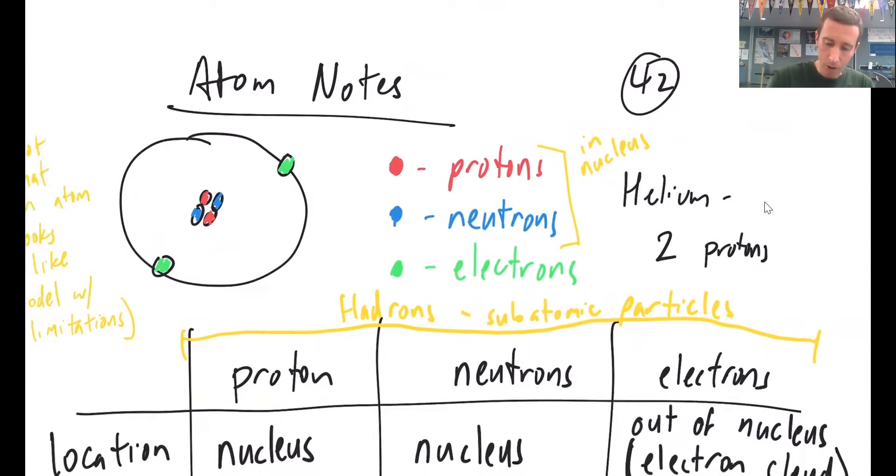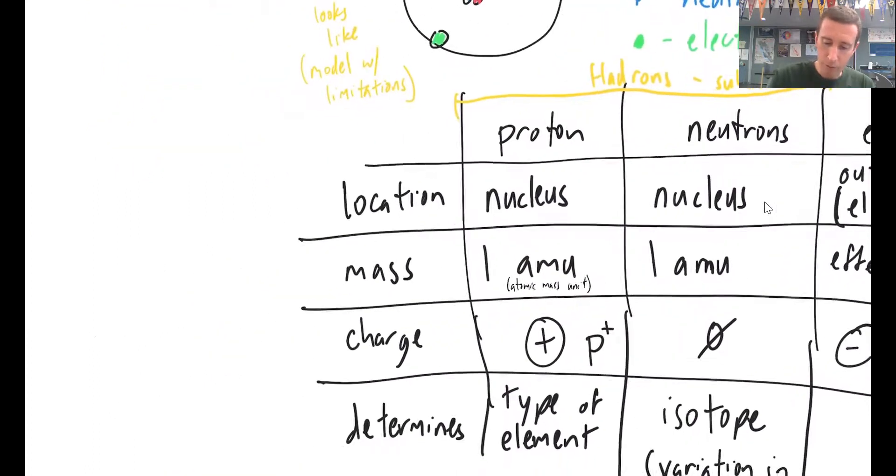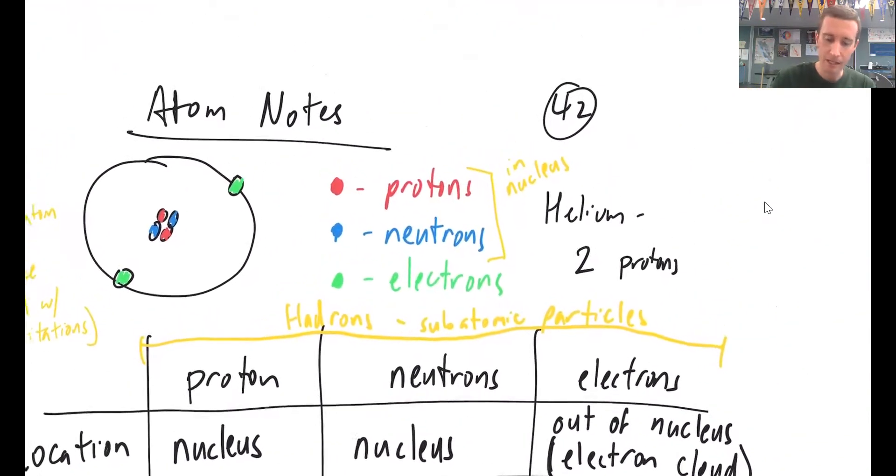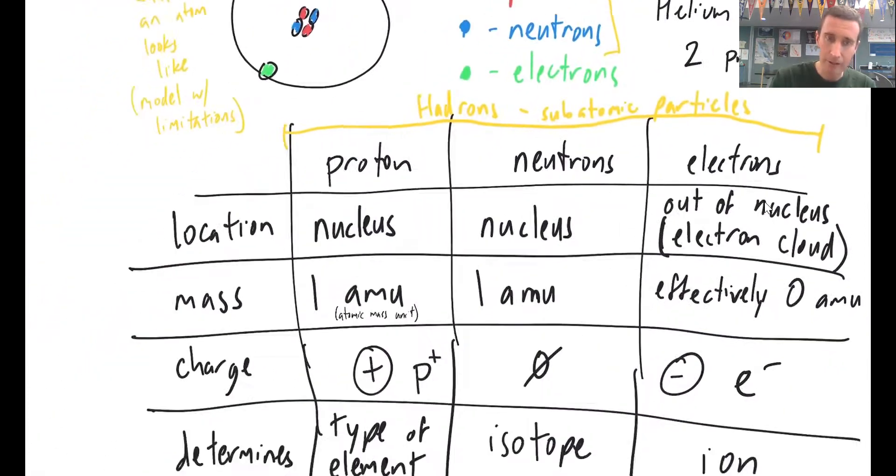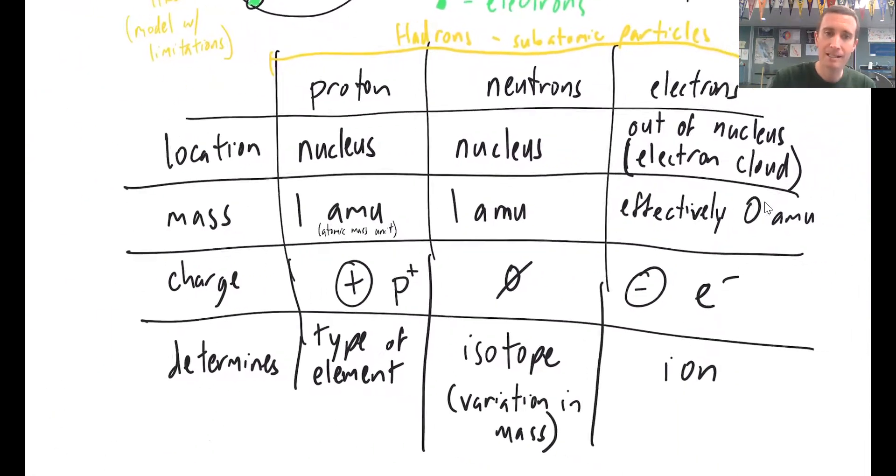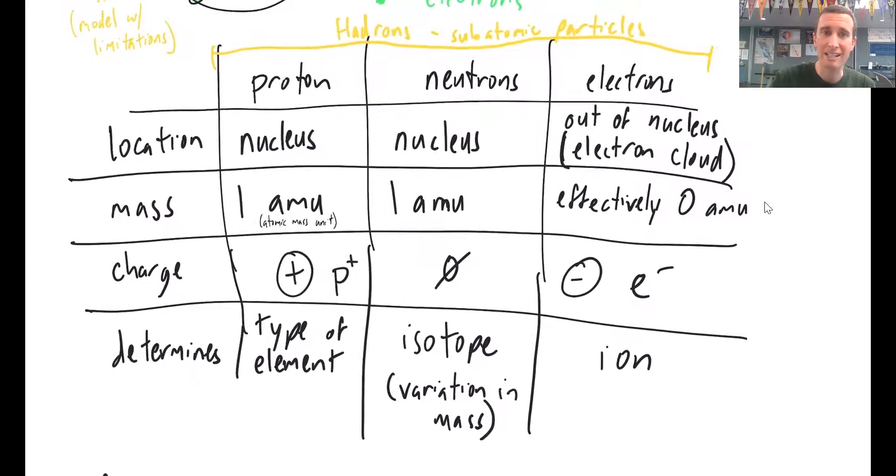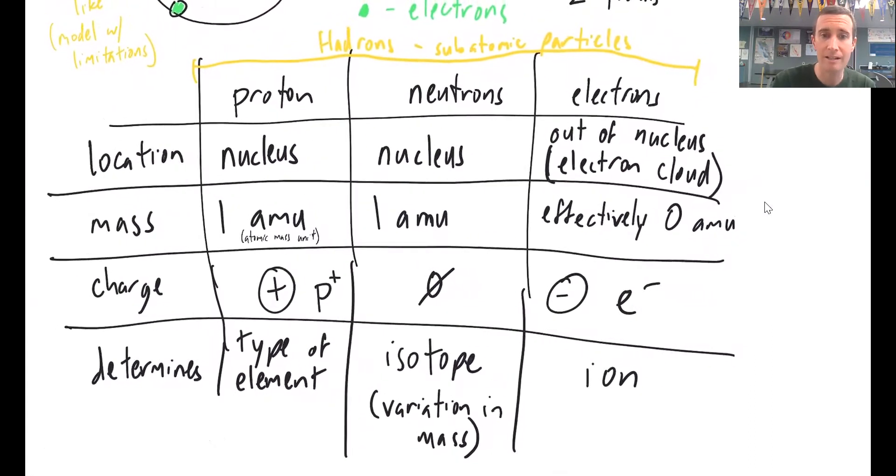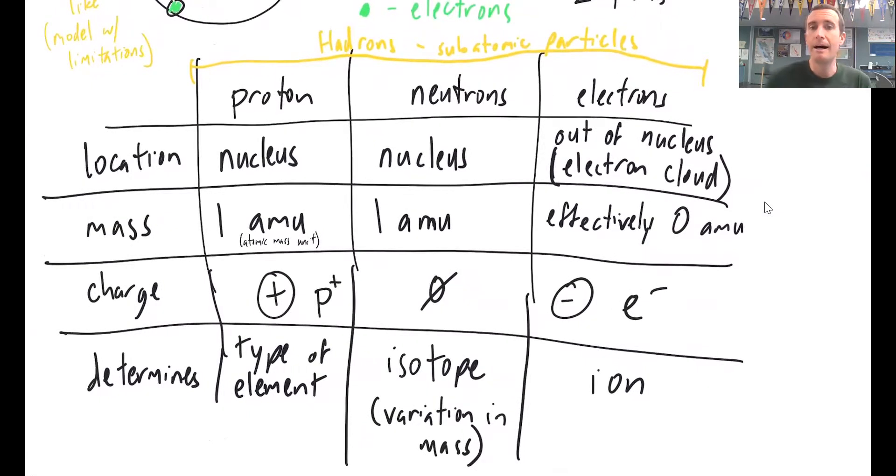So let's do a little table. We're going to set up a table with protons, neutrons, and electrons. Those are going to be our three columns. And then we're going to talk a little bit about the location, the mass, the charge, and what exactly this determines. So protons, neutrons, and electrons are examples of hadrons. Hadrons is the name that we give to subatomic particles, the things that make up an atom.